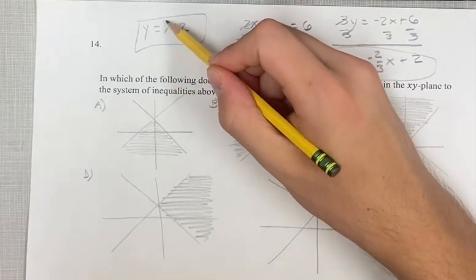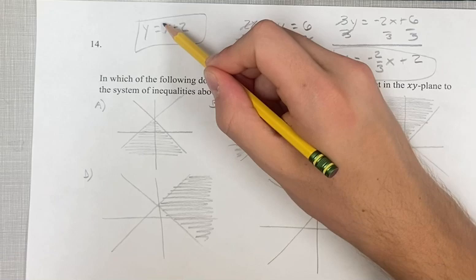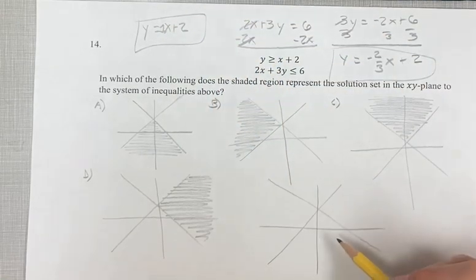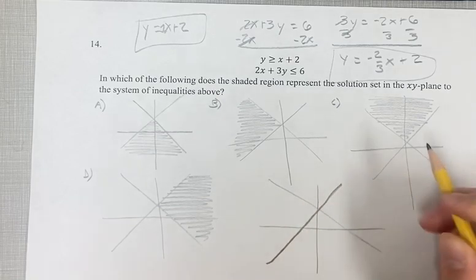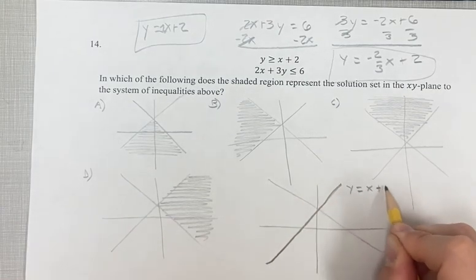Well, if you notice, this equation has a positive slope, positive 1. And this one has a negative slope, negative 2 thirds. So this is y equals x plus 2 because there's a positive slope. And this is the equation y equals negative 2 thirds x plus 2 because it has a negative slope.